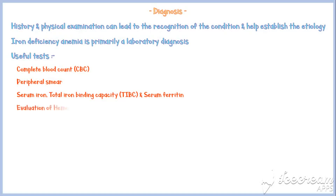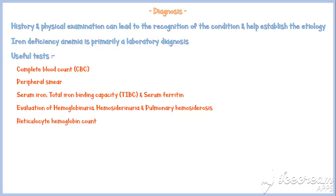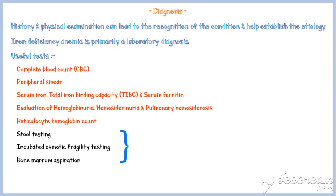Additional evaluations include assessment of hemoglobinuria, hemosiderinuria, pulmonary hemosiderosis, and reticulocyte hemoglobin count. Stool testing, incubated osmotic fragility testing, and bone marrow aspiration are also useful for establishing the etiology. The first three tests are the most useful when diagnosing iron deficiency anemia.